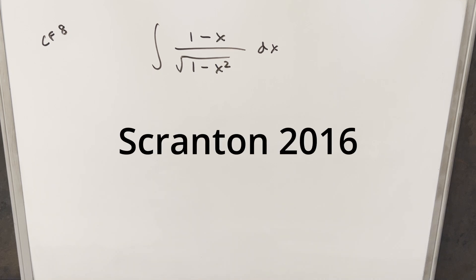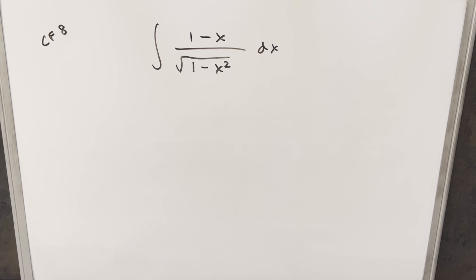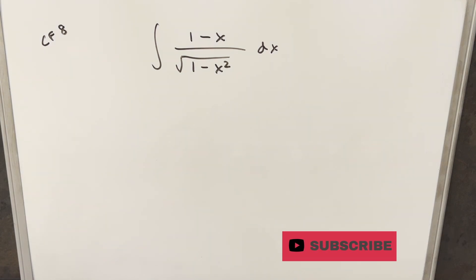We have another integral from the Scranton Integration B 2016 college final, number eight. We have the integral of one minus x over the square root of one minus x squared dx. I found this one to be really similar to a problem I did recently — I think I called it 'don't overthink it,' because again, when I did this the first time, I definitely overthought it and missed the most obvious way to handle this.